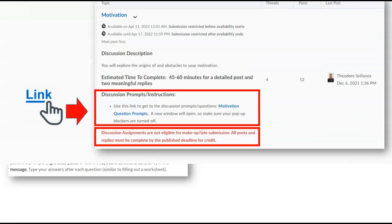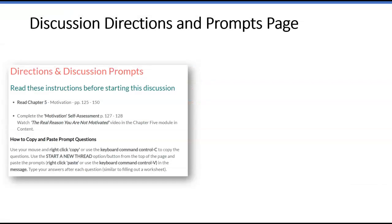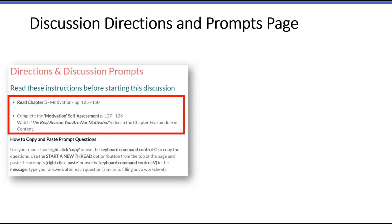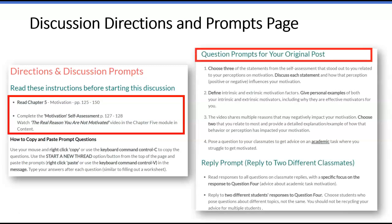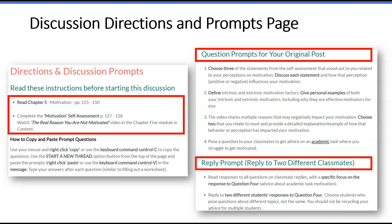The directions link takes you to a detailed page of instructions. At the top, it provides the required resources to answer question prompts. Scrolling down, the prompts for your original post — usually 4 to 5 questions — are listed. You will also find the specific question prompt for your replies. All prompts for your post and for replies are unique for each discussion.